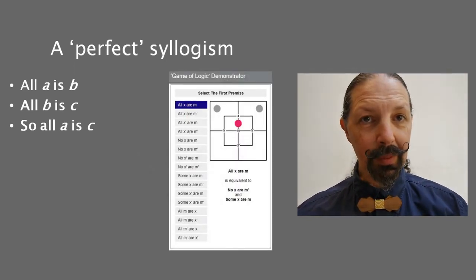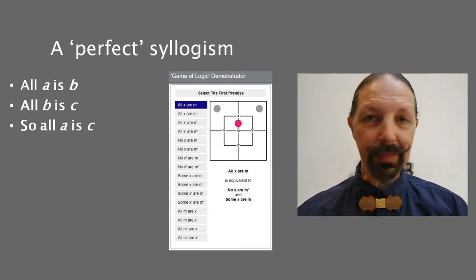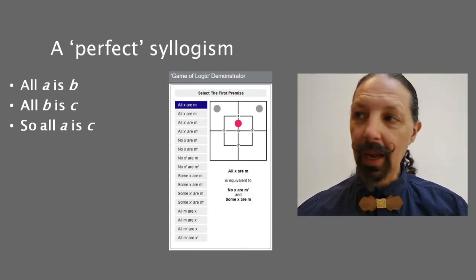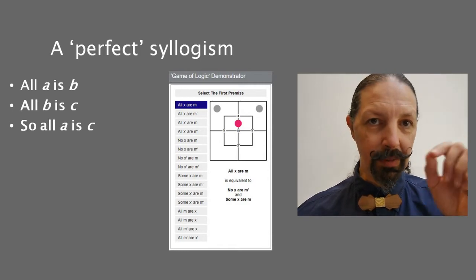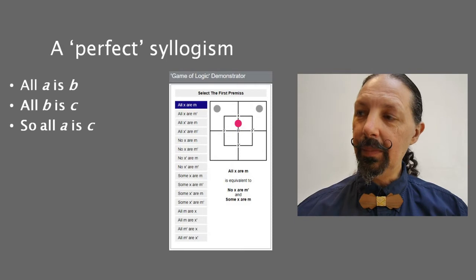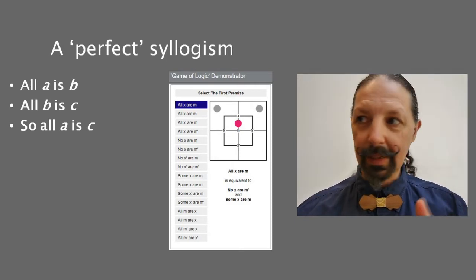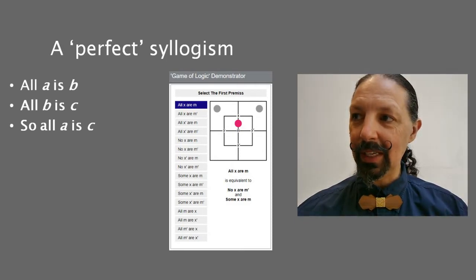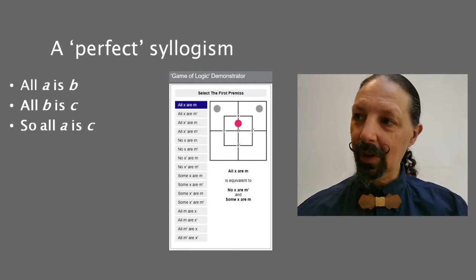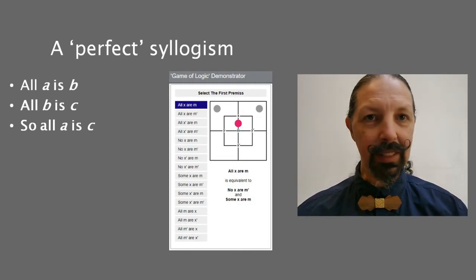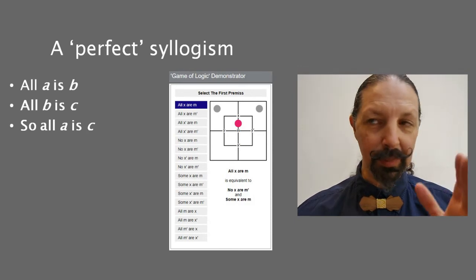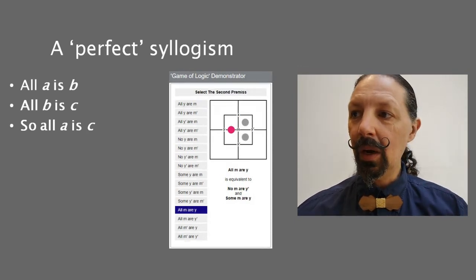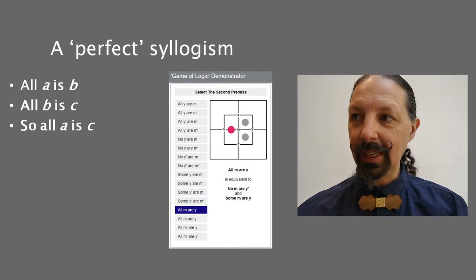Lewis Carroll came up with Carroll diagrams in his book Game of Logic, and he had two squares nested within each other, in which you put grey and red counters. That's an online program that can generate the positions of these. So I went online and generated the positions of the counters for all X are M, which is equivalent to my all A is B, all M are Y, which is equivalent to my all B is C.